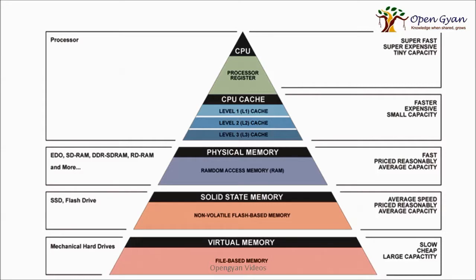Then we have solid state memory. These are non-volatile flash-based memory, such as SD cards or flash drives — the pen drives that we have. They are of average speed; comparing USB transfer rates, it is around 3 to 10 Mbps. They are reasonably priced and also average in capacity.